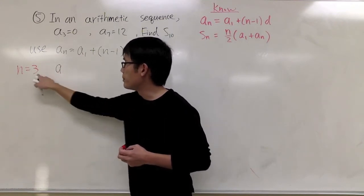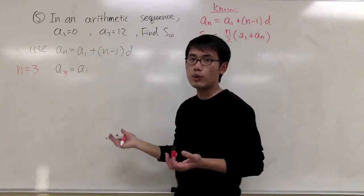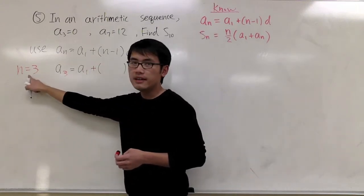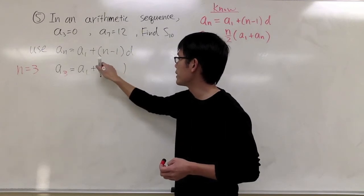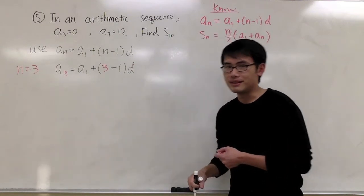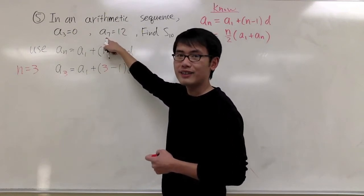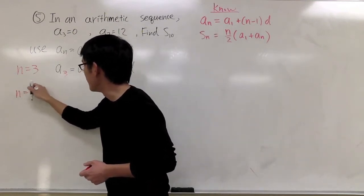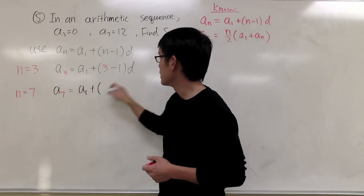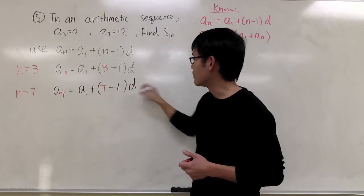That gives us a3 = a1 + (3−1)·d. I can also set up another equation from a7. That means n is equal to 7, so I get a7 = a1 + (7−1)·d.